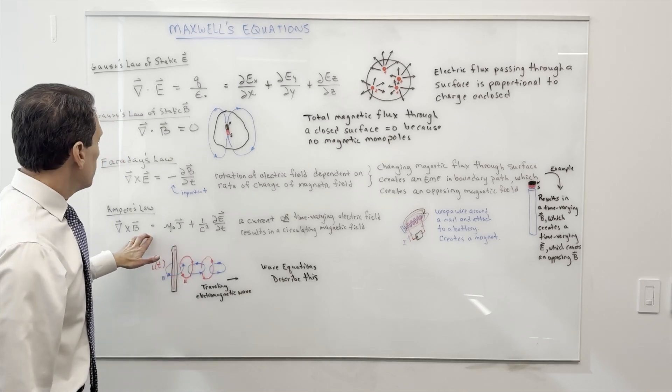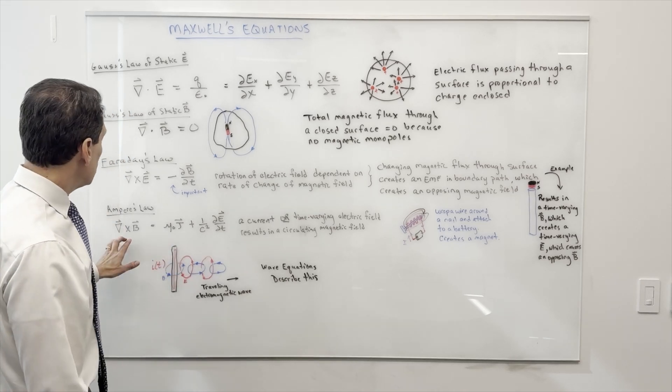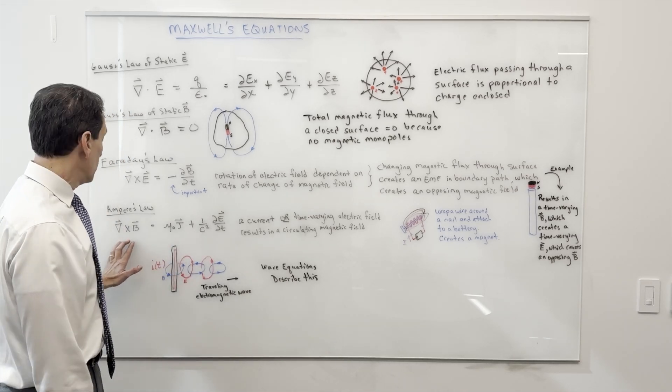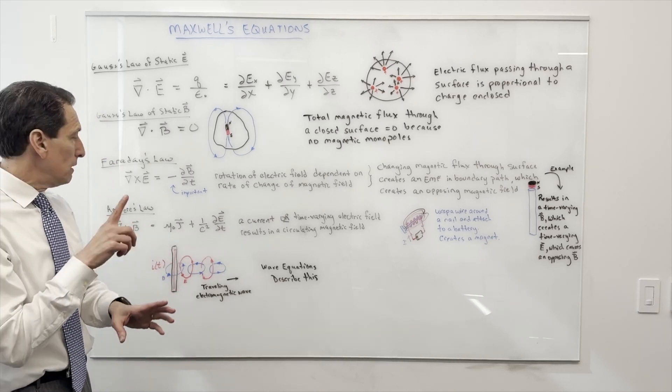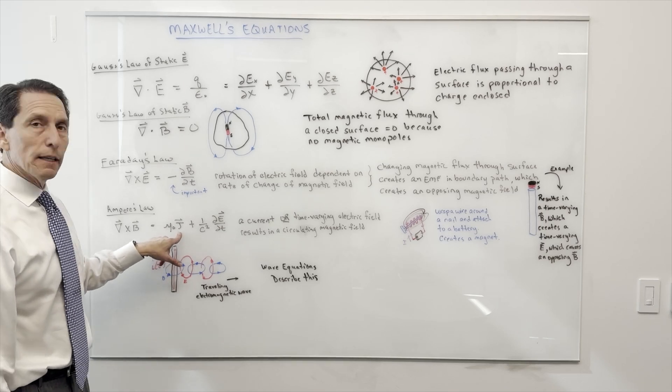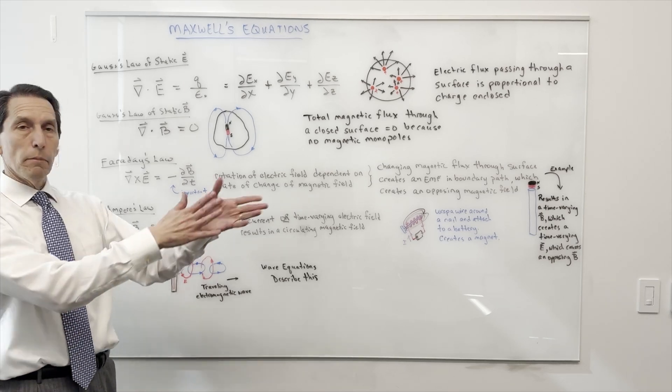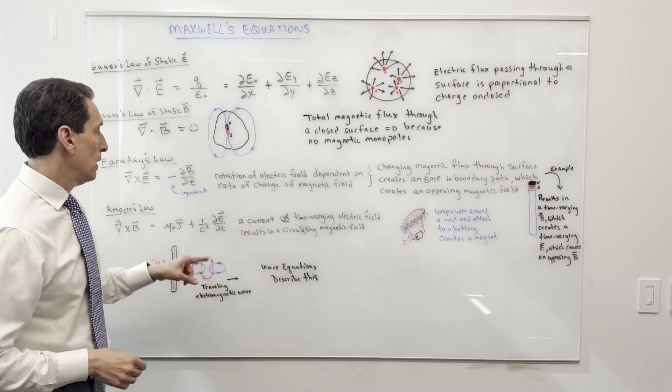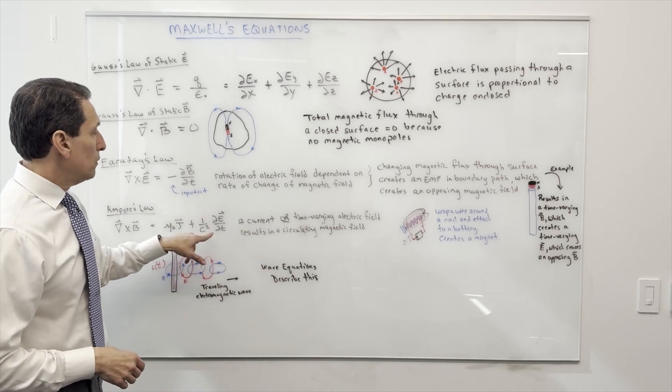The last one is Ampere's Law. It says the curl of the magnetic field—again, a circling magnetic field—is equal to one of two things added together. You could have a fixed current, that's this J, so just some current passing in a wire, just a DC current.